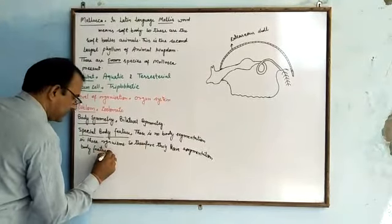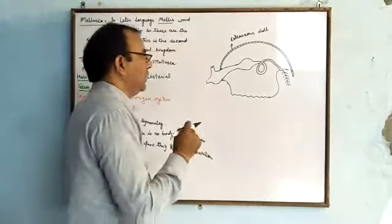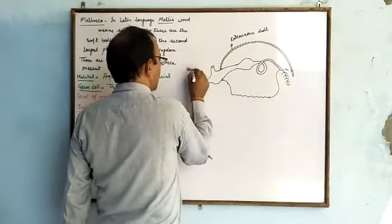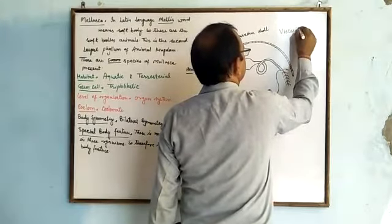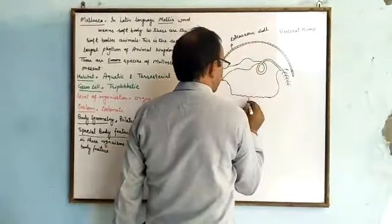The body has three distinct regions: head, muscular foot, and visceral hump.